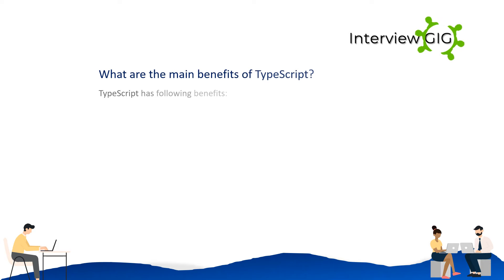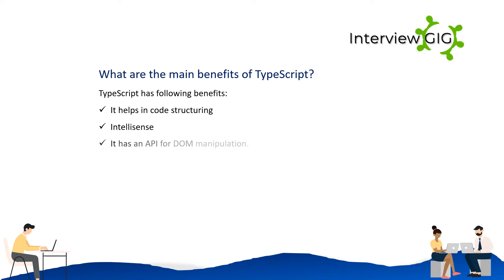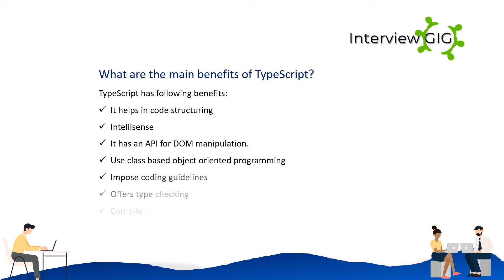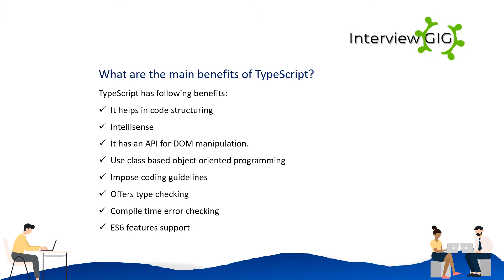What are the main benefits of TypeScript? TypeScript has the following benefits: it helps in code structuring, IntelliSense, it has an API for DOM manipulation, use of class-based object-oriented programming, impose coding guidelines, offers type checking, compile-time error checking, and ES6 features support.